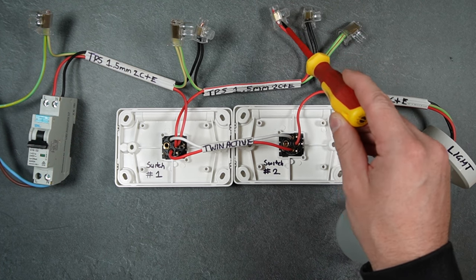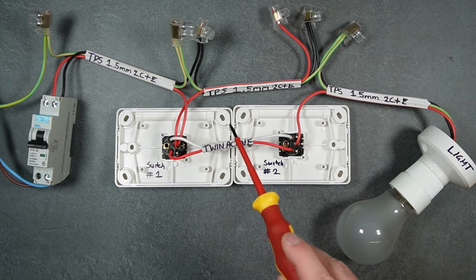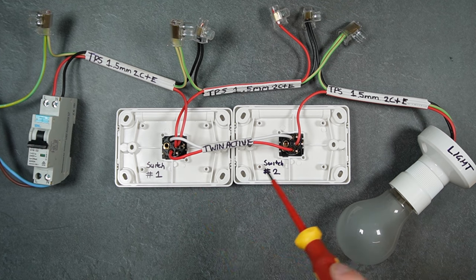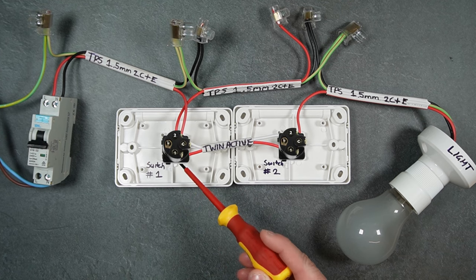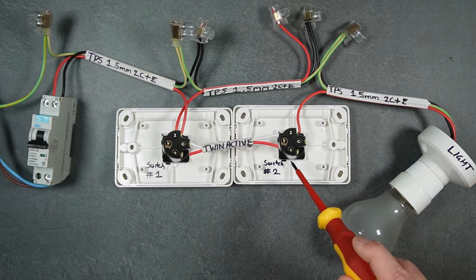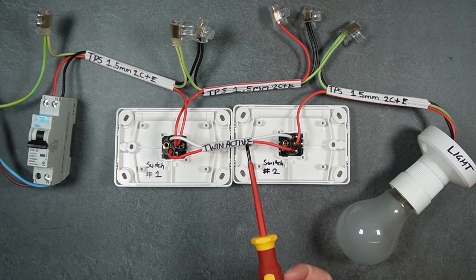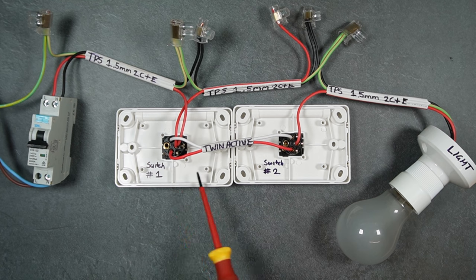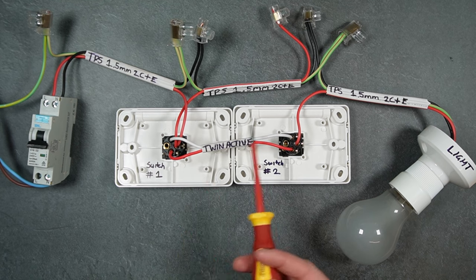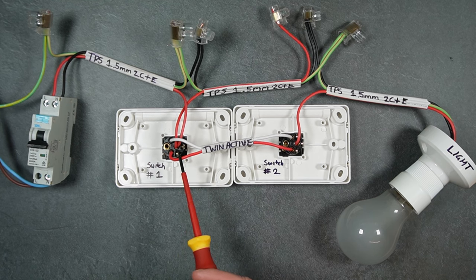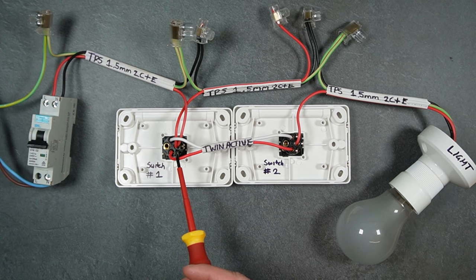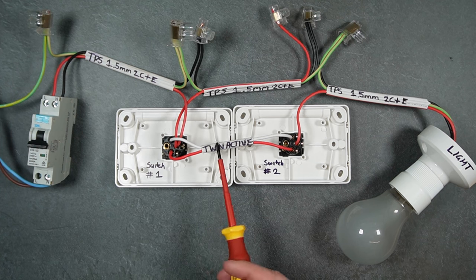I'll explain that in a second. The twin active cable links the two switches using terminals one and two at each switch. It doesn't matter if you use the red or the white to link one and two - I mean by that you can link the number ones with the red or the number ones with the white. It doesn't matter what colors you use as long as they correspond at the other end.